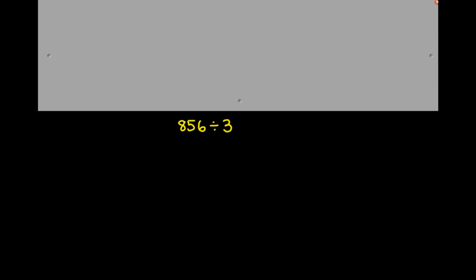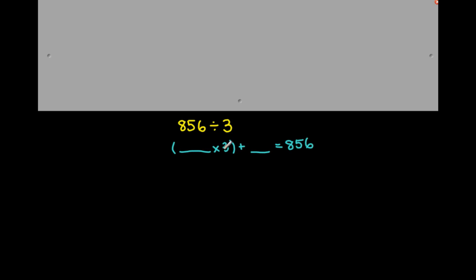Now I know when you hear division sometimes it may be confusing because division has not really been explained to you. But if we think back to the video in which we learned exactly what division was, 856 divided by 3 really should be asking us: 3 times what number, plus some remainder, gives us 856?